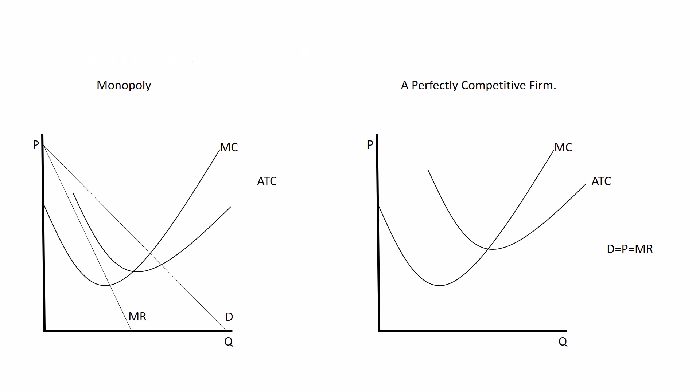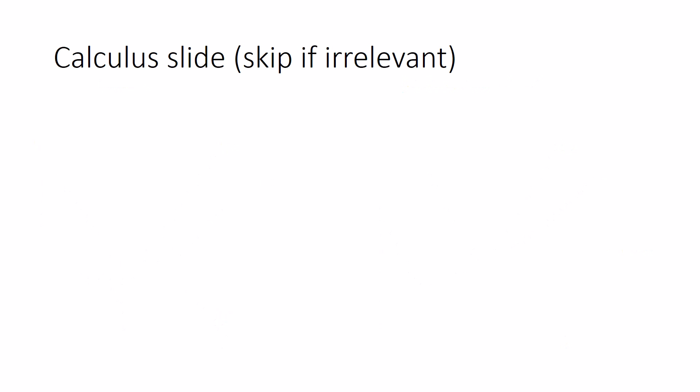Specifically, these have the same intercept, but the marginal revenue curve has double the slope. So quick calculus side note. You don't have to know this in my class, but in some classes you do. So skip if you need. But the marginal revenue curve is always going to be twice as steep as demand whenever the demand curve is linear.